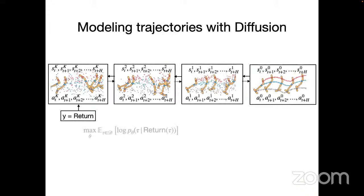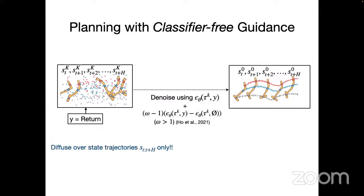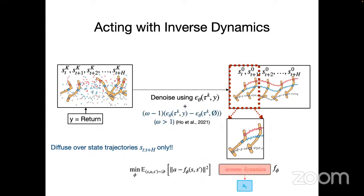As an introduction to diffusion models: given a trajectory of states, you gradually add Gaussian noise to corrupt it, and you learn a denoising network that, starting from a noisy state, learns to denoise it back to the original clean trajectory. To synthesize behaviors, we denoise directly in state space and then use the inverse dynamics model to infer — given two adjacent states — which action to take.